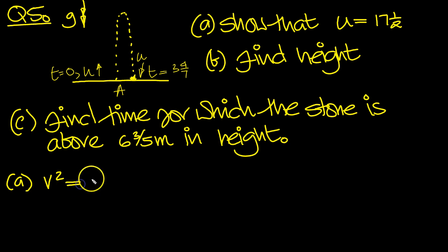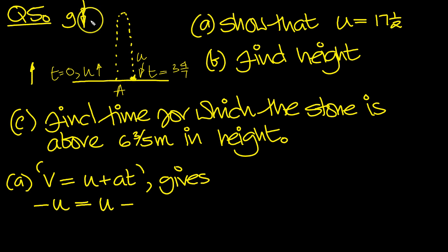So v equals u plus at. v equals u plus at, I think is the one to use. So v equals u plus at gives, so let's apply that in the upwards direction then. The final velocity is downwards with u, so that's minus u. The initial velocity is upwards with u, plus a upwards, the acceleration is minus g, times the time.